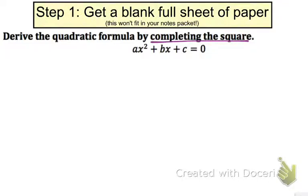When we complete the square, remember the first thing we have to do is get rid of any coefficients of x² by dividing. So we have to start here by dividing everything by a, and so now we're going to get x² + (b/a)x + c/a = 0. Next, we need to get c/a to the right-hand side by subtracting it.